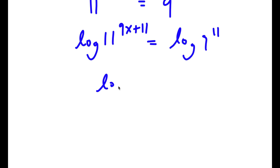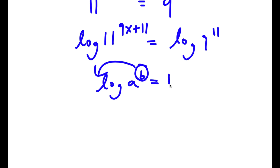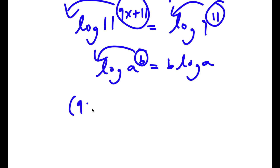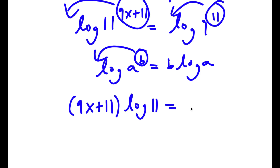Now, if I have something in the form log a to the power of b, I can move b to the front — this is the same thing as b times log a. So log 11 to the power of 9x plus 11, I can move 9x plus 11 to the front. And log 9 to the power of 11, I can move 11 to the front. So now I have 9x plus 11 times log 11 is equal to 11 times log 9.